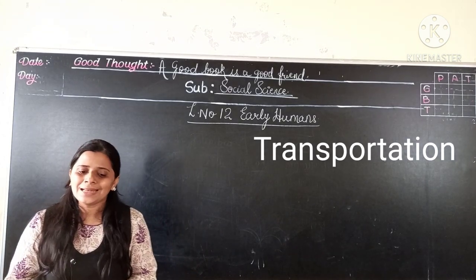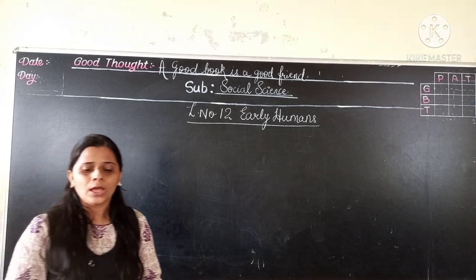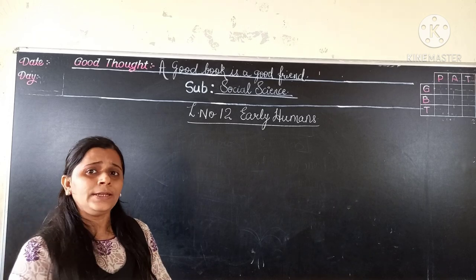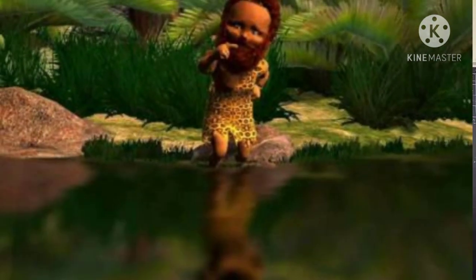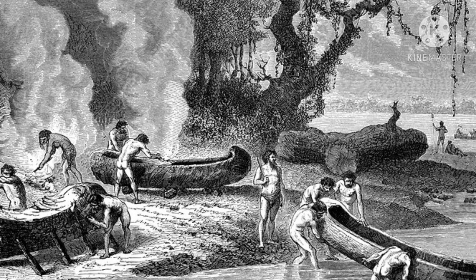Now let's see about transportation in early humans. Early humans made their houses near the river and lake so that they could get water to cook food and fulfill other needs. One day, early humans saw logs of wood floating fast on water in the rivers. This inspired them to think, and it inspired them to make rafts and boats of wood to cross the river.